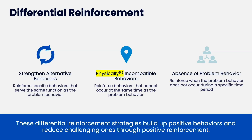To summarize: differential reinforcement is about strengthening alternative behaviors. DRA means you reinforce specific behaviors that serve the same function as the problem behavior. DRI means you reinforce physically incompatible behaviors — behaviors that cannot occur at the same time as the problem behavior. And DRO means you reinforce the absence of the problem behavior during a specific time period.